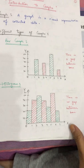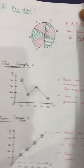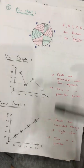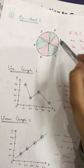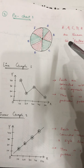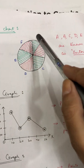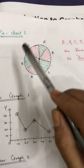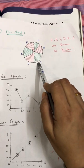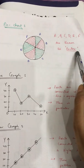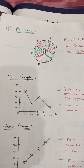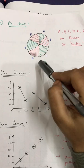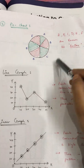Next is the pie chart. A pie chart is a circular representation of any data which is divided with the help of sections. These sections A, B, C, D, E, F are known as sectors. The data given to you in the form of a table or statement has to be represented in the form of a pie chart.